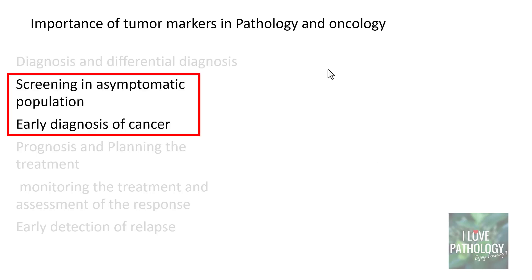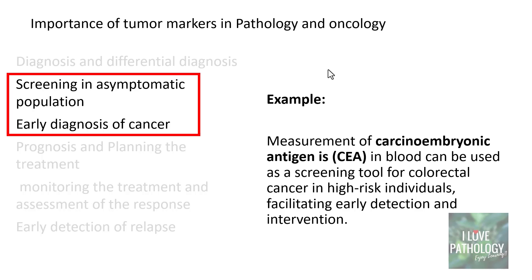The second important use is screening in asymptomatic populations and early diagnosis of cancer. For example, carcinoembryonic antigen (CEA) can be used as a screening tool for colorectal cancers, as it is significantly elevated in colonic carcinomas. Particularly in high-risk individuals, it can be utilized as a screening tool that facilitates early detection and early intervention.